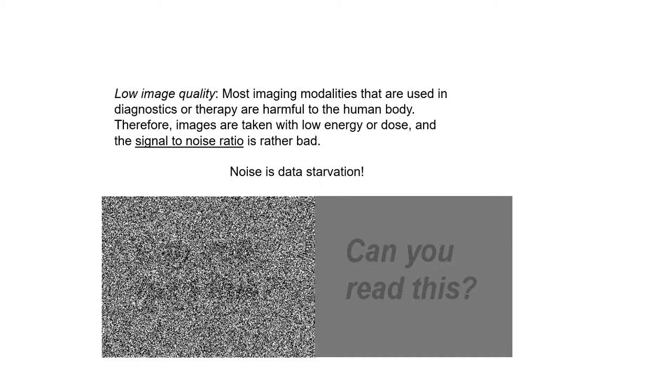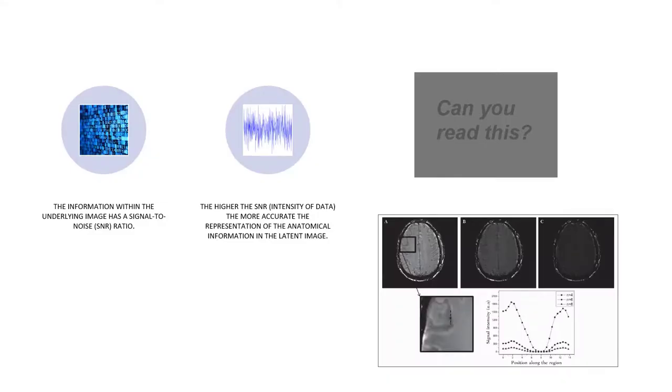Most energies used in the imaging modalities for diagnostics or therapy are harmful to the human body. Therefore, we use a minimum amount of signal. The quantity of the signal relates directly to the ability to create images. The signal-to-noise ratio correlates to the amount of data that has been gathered or collected. The higher the signal-to-noise ratio intensity of data, the more accurate the representation of the anatomical image in the latent image and the image that we display.